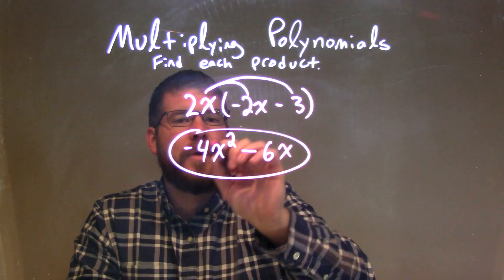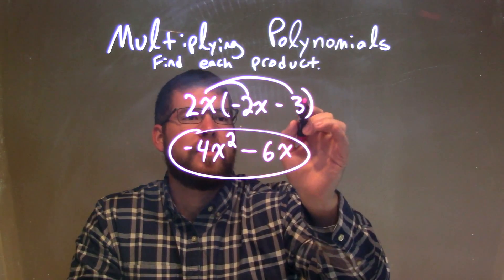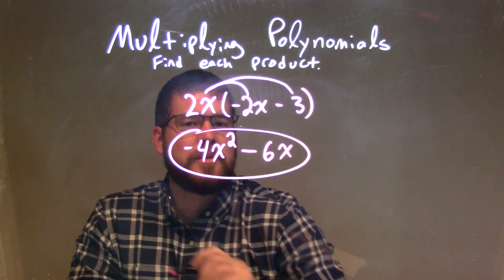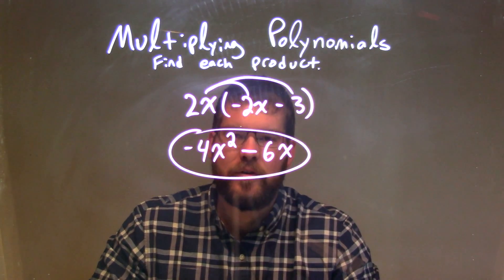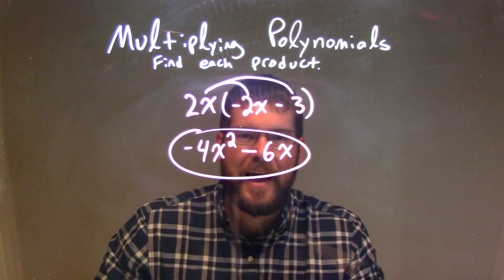2x times negative 2x is negative 4x squared, and 2x times 3 is 6x, there's a subtraction between. And so we have our final answer here of negative 4x squared minus 6x.